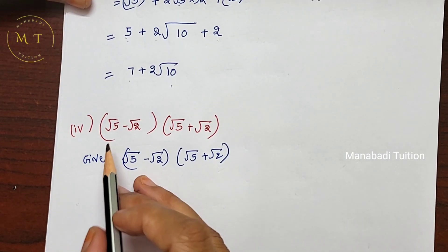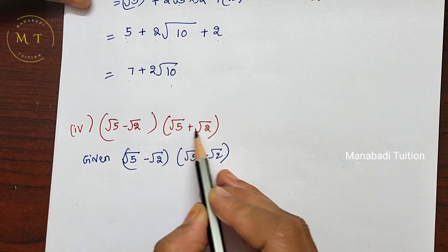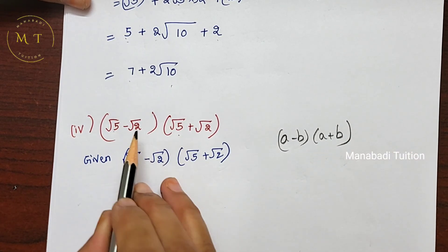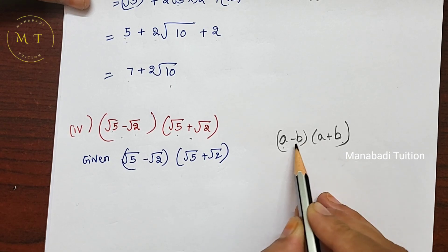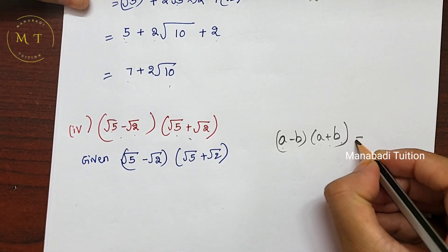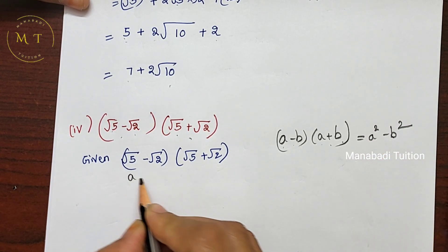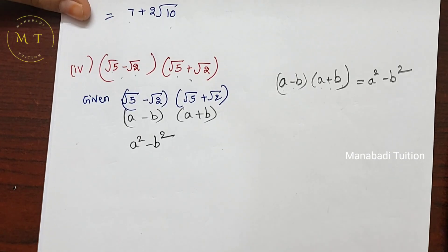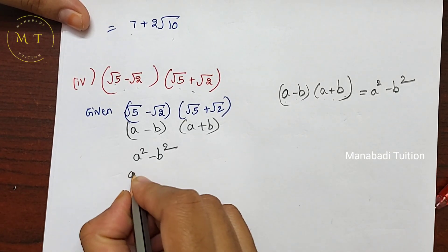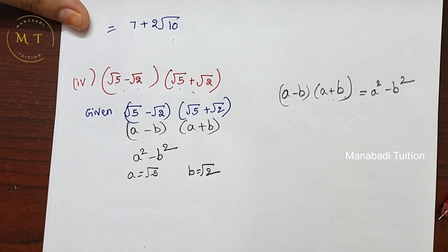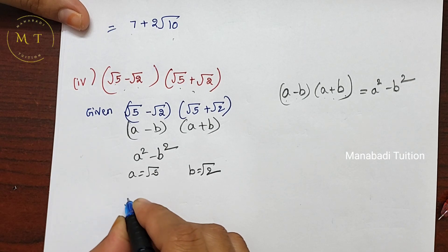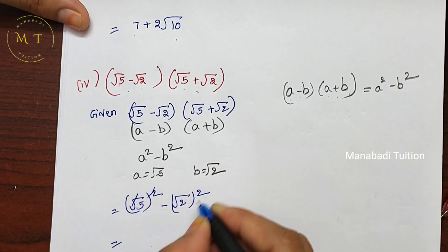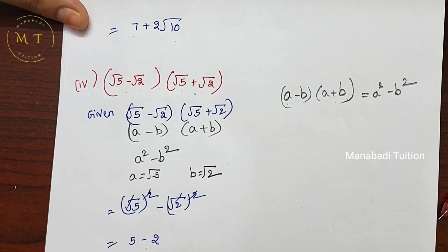Next, fourth one: (root 5 minus root 2)(root 5 plus root 2). We use the formula a minus b into a plus b equals a squared minus b squared. Here a equals root 5 and b equals root 2. So root 5 whole square minus root 2 whole square — square and root cancel — gives 5 minus 2, which equals 3.